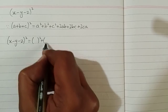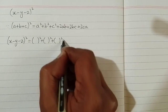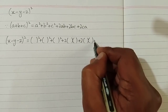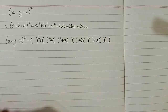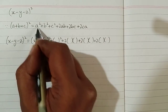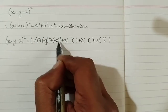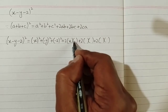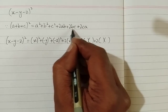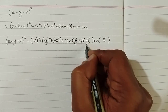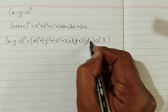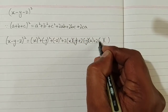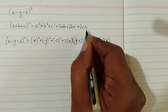So we write x minus y minus z whole square is equal to a square plus b square plus c square plus 2ab plus 2bc plus 2ca. Now we put x in place of a, minus y in place of b, and minus z in place of c. For 2ab we put x in place of a and minus y in place of b. For 2bc we put minus y in place of b and minus z in place of c. For 2ca we put minus z in place of c and x in place of a.